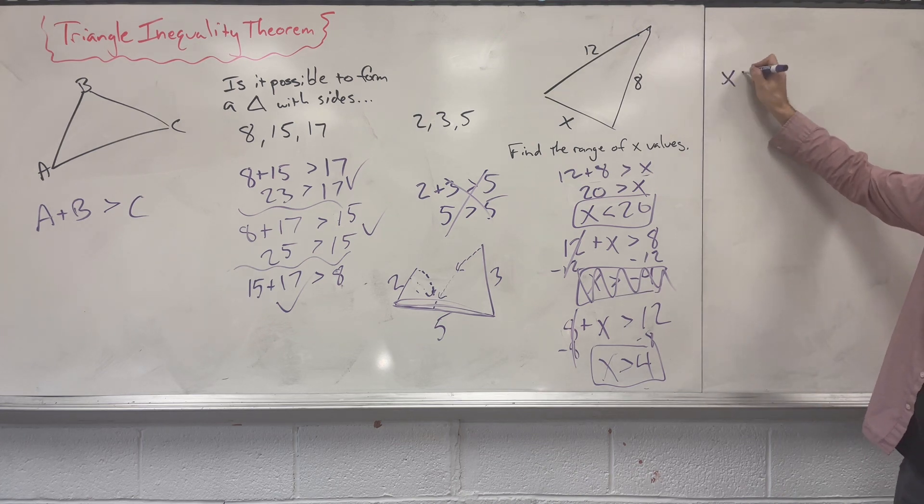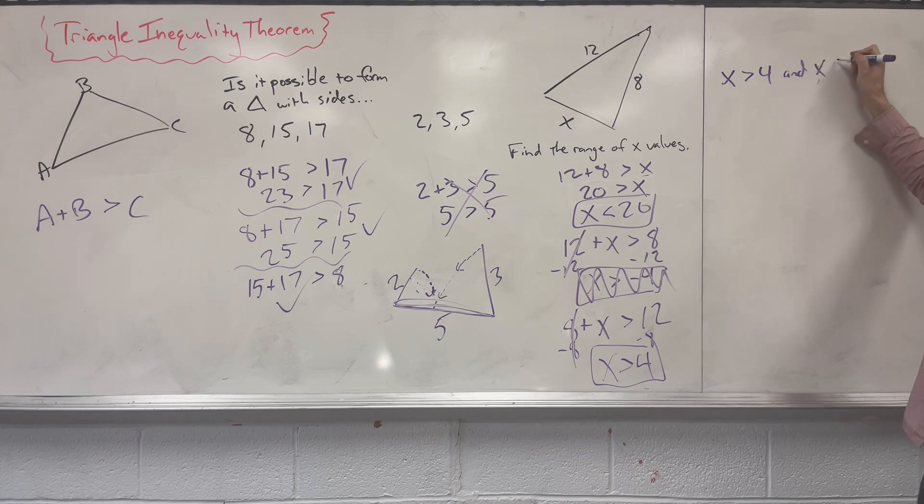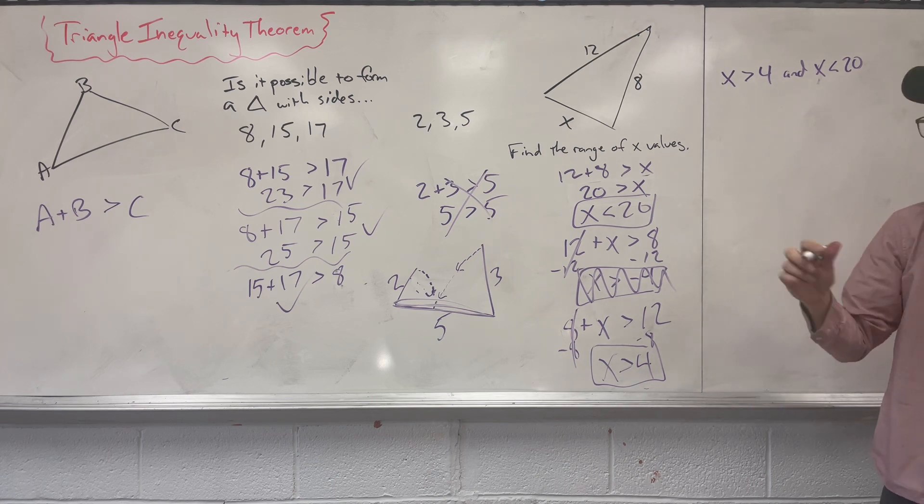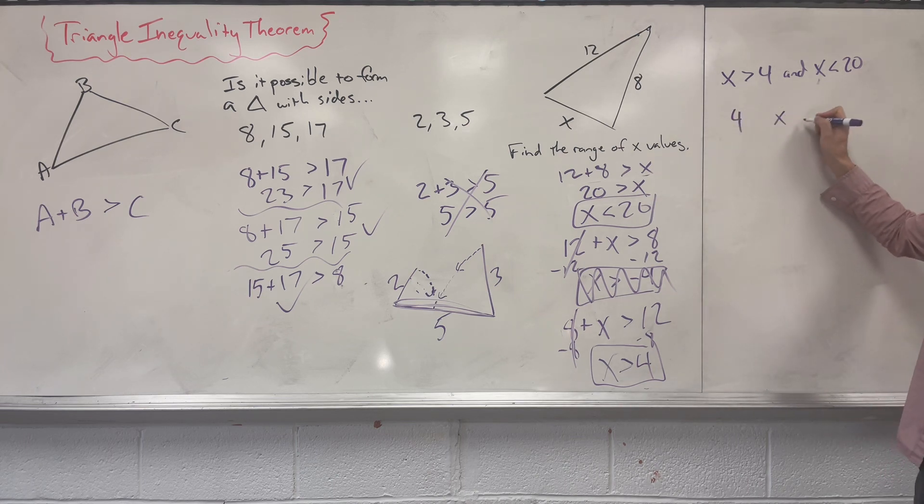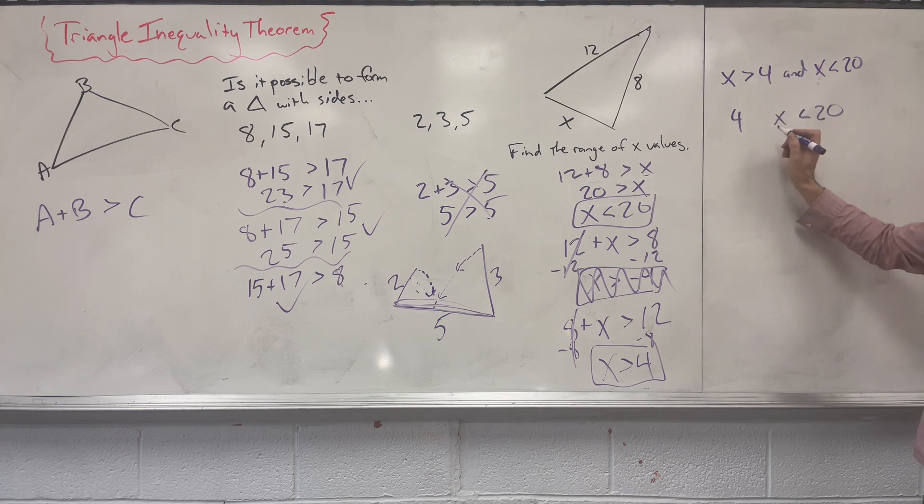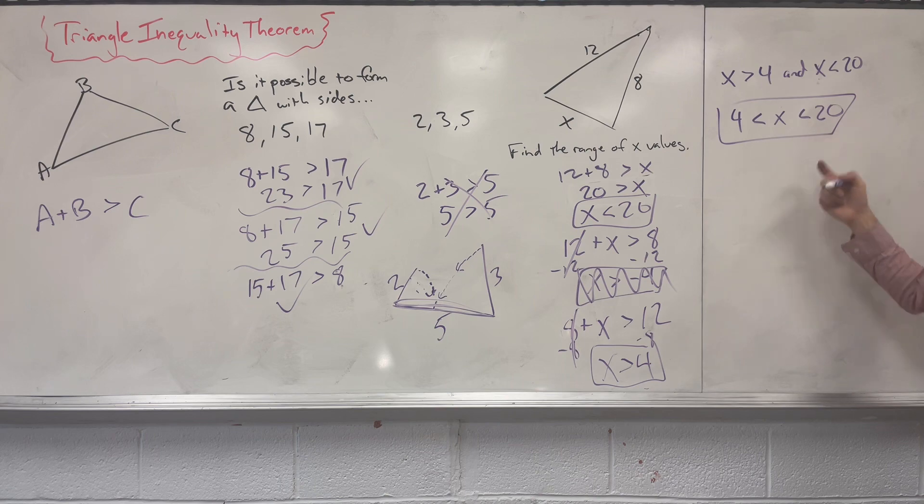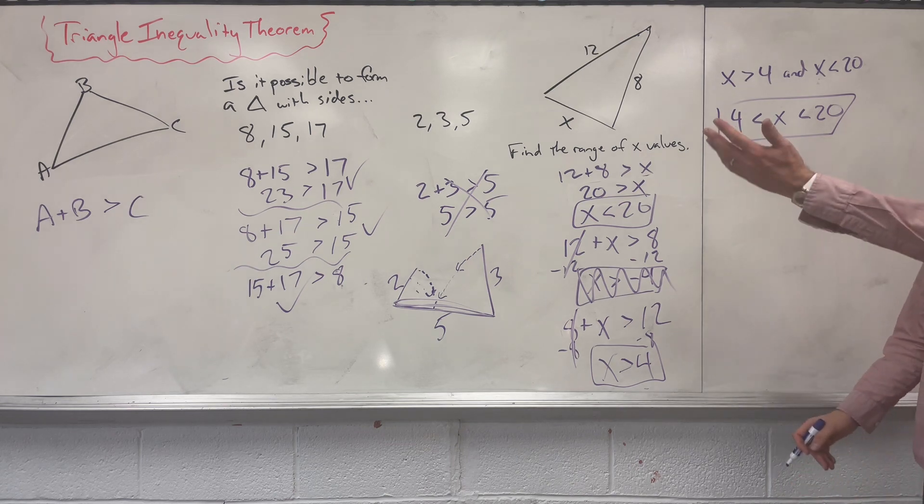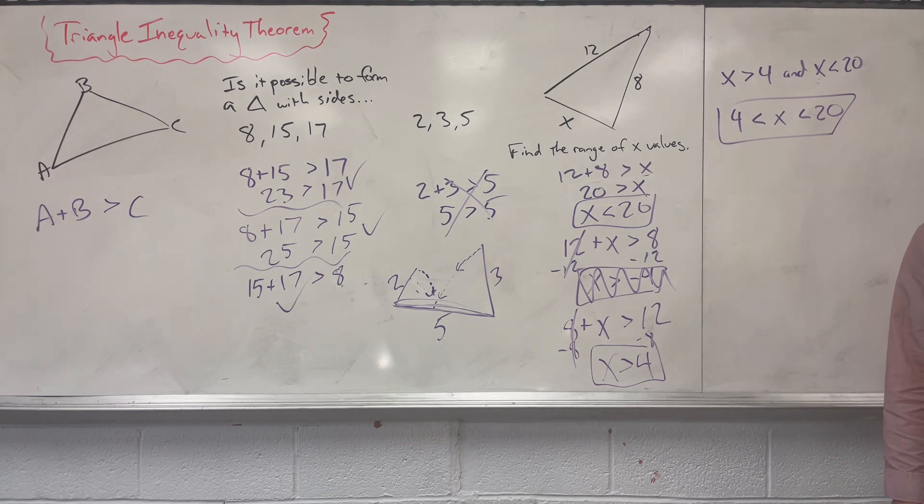So two ways we can write this. We could say x is greater than 4 and x is less than 20. Or we could write it as a compound inequality and say 4 is less than x is less than 20. So this inequality statement stays the same. This one, let's flip it and eat the x. So either one of these statements will work. What's the range from 4 to 20? It's got to be bigger than 4 and smaller than 20. And that is using the triangle inequality theorem.